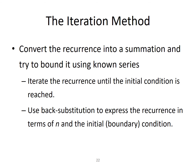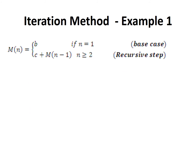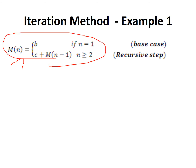In the iteration method, you iterate the recurrence until the initial condition is reached. Let's apply this to the factorial recurrence. You wanted to calculate the number of multiplications for n factorial. You expand the recurrence: m(n) = c + m(n-1), then m(n-1) = c + m(n-2), and so on until reaching the base step.